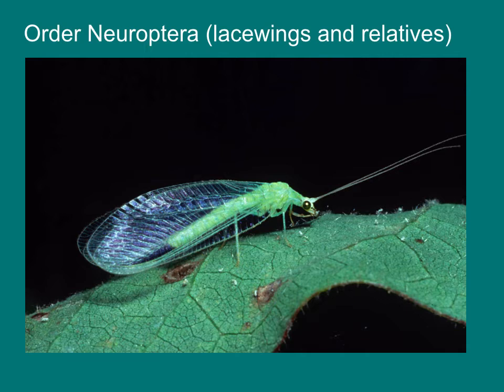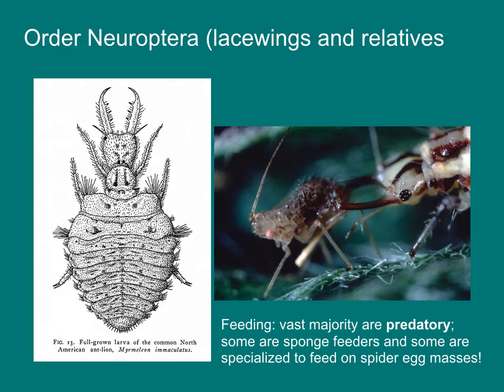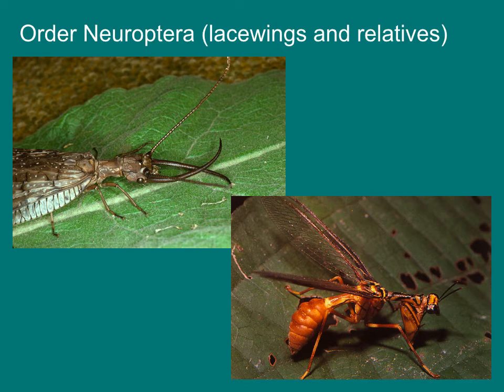Another order in the Holometabola are the lacewings and relatives, the order Neuroptera. These insects are all predatory, both as larvae and as adults. Larval lacewings are aggressive hunters with piercing mouthparts that they use to capture their prey. The photo on the right shows a lacewing drinking the internal organs of its soft-bodied prey, an aphid. Dobson flies are also in this order — a group familiar to fishermen. The mantispid shown resembles a mantid but is actually in a completely different order.